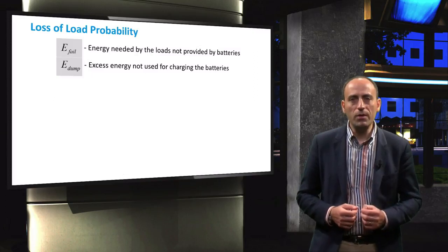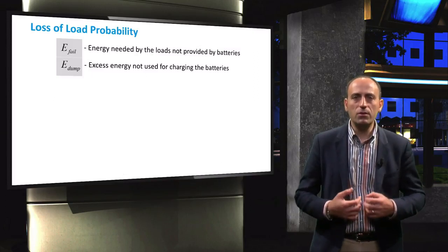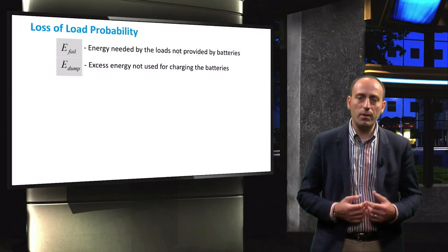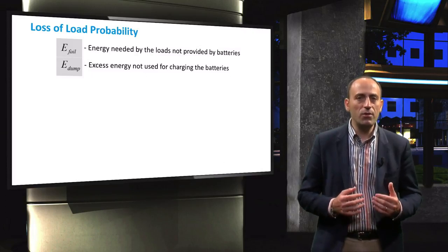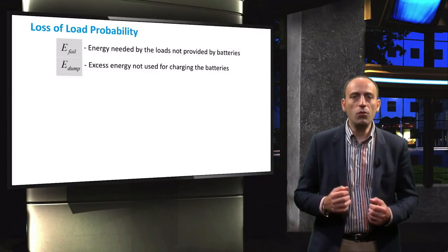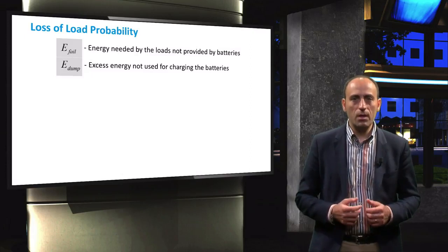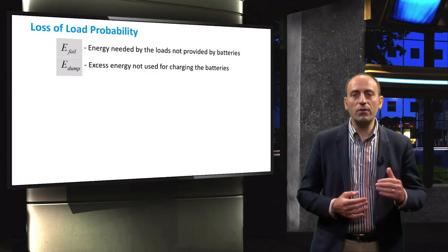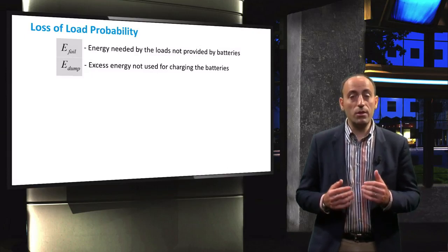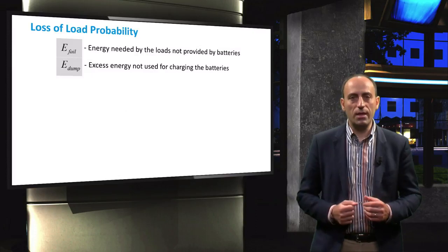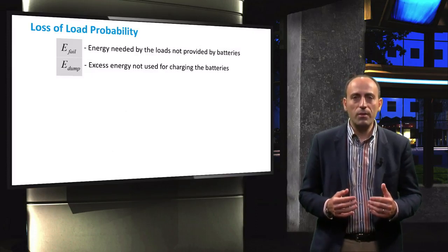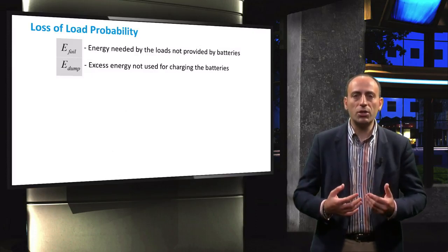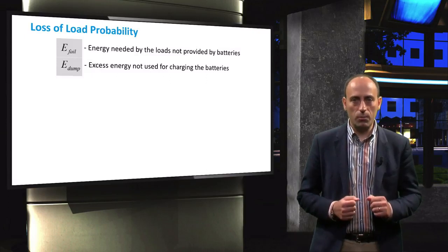The second parameter is E-dump. E-dump is defined as the energy produced by the PV array that is neither used to power a load nor stored in the batteries. This can occur, for example, if the PV generation is greater than the load consumption and the batteries are already full after a number of sunny days. It therefore basically represents the overproduction of the PV array in your PV system.